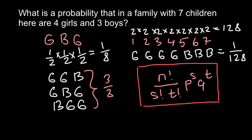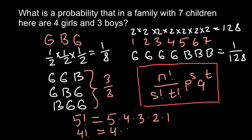What is a factorial? For example, what is a factorial of five? This means we have to multiply 5 × 4 × 3 × 2 × 1. What is a factorial of four? That is 4 × 3 × 2 × 1. And factorial of three equals 3 × 2 × 1. So now you have the logic of what a factorial is.